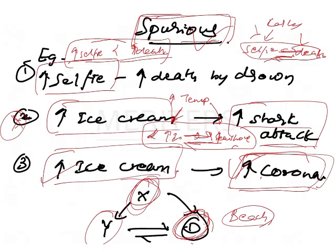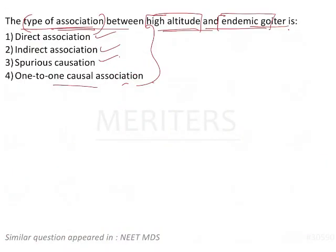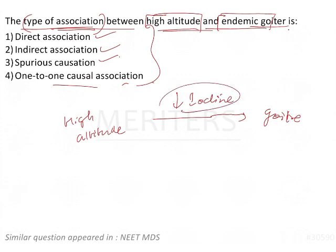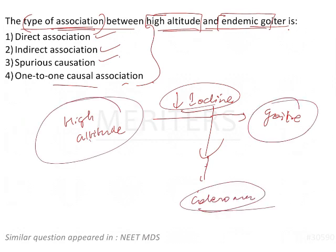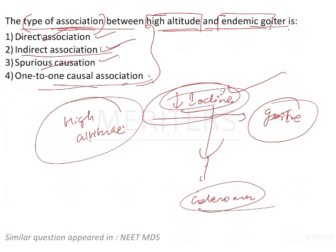Now coming back to our question: the type of association between high altitude - as I told earlier, high altitude does not directly cause goiter. What it will lead to is reduced iodine, so this reduced iodine is a factor hiding in between these things. So such kind of association is called indirect association. So here the answer is indirect association. We have seen what is direct and spurious causation also. One-to-one is also kind of related to direct association.